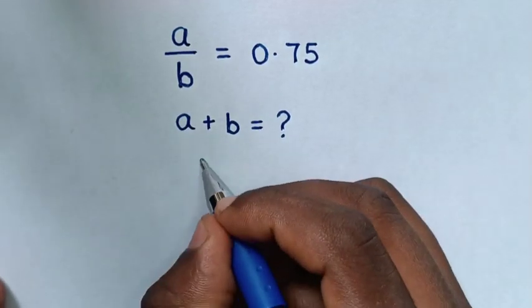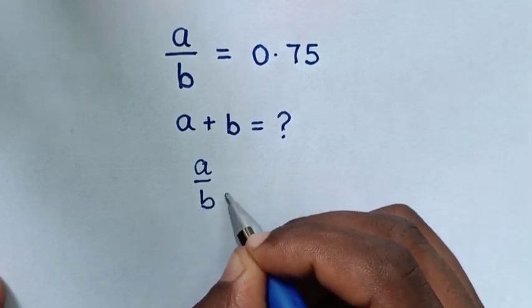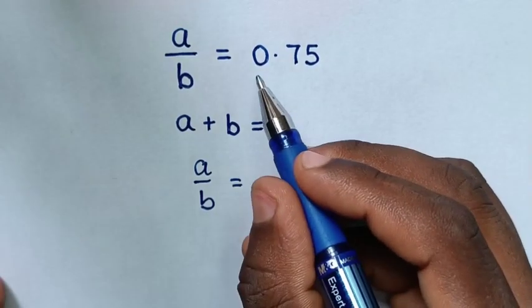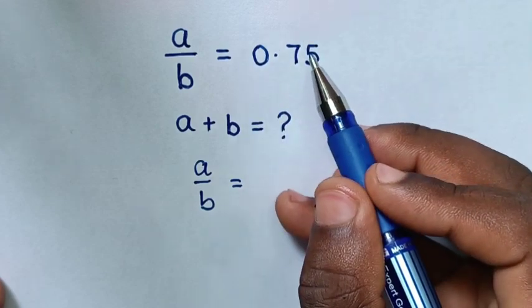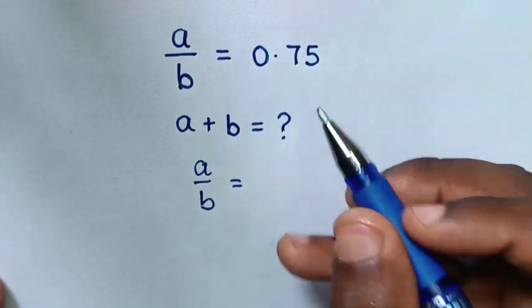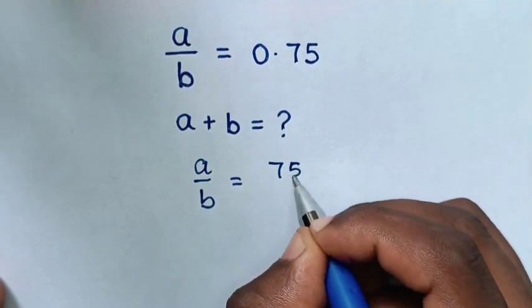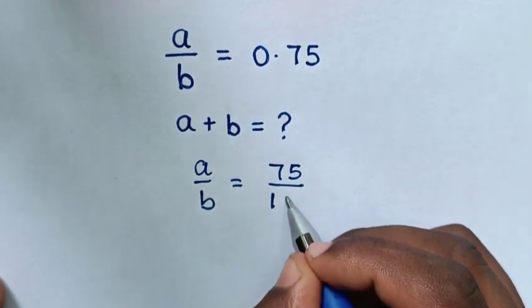So from this equation, A over B is equal to 0.75 is in decimals, so I convert this into fractions. As here there are two decimal places, it will be 75 over 100.